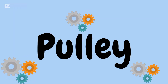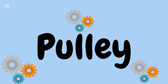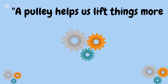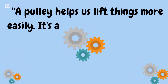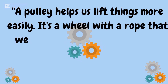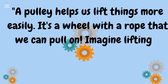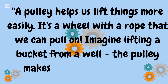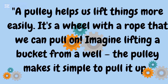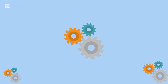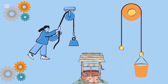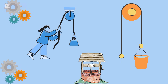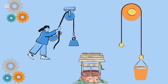Next is pulley. A pulley helps us lift things more easily. It's a wheel with a rope that we can pull on. Imagine lifting a bucket from a well — the pulley makes it simple to pull it up. As you see in the picture, by using a pulley it's easy to lift the bucket.